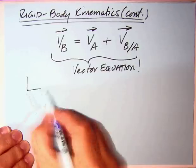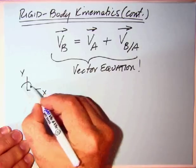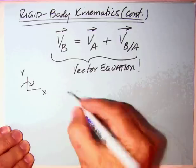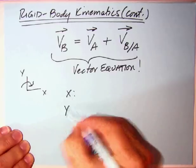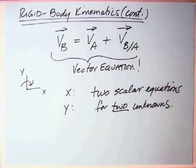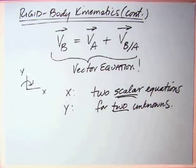It's a vector equation, but we are going to use our standard coordinate system over here. And we'll end up with an X and Y equation. And we'll have two equations to find two unknowns. So what we have is two scalar equations for two unknowns. And that's it.